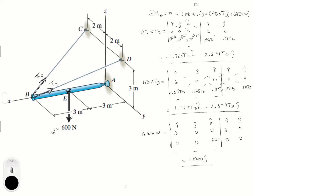Adding all three matrices: in i we have nothing; in j: -2.574 Tc - 2.574 Td + 1800 = 0 (equation 1); in k: -1.728 Tc + 1.728 Td = 0, which means Tc = Td. We'll call that common tension T.